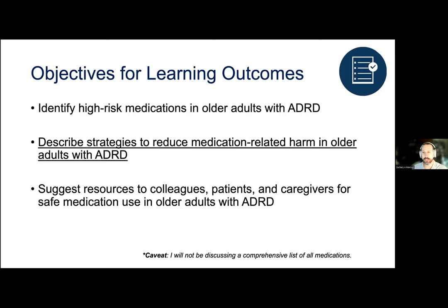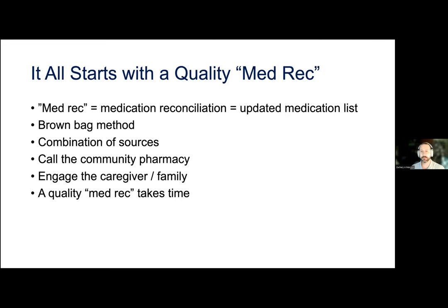Now let's talk about strategies for reducing medication-related harm in older adults with ADRD. Before we can do anything, we need to be confident that we're working with an updated medication list, starting with a quality medication reconciliation, or med rec. The best way to do this is to have the patient and/or caregiver bring in their actual pill bottles and a medication list—or if you can do a home visit, that's ideal, as you can see how they store medications and advise on getting rid of old or expired ones. You'll likely need to use a combination of information sources: asking the patient and caregiver, looking in the EHR, and calling the pharmacy for the patient's medication fill history.